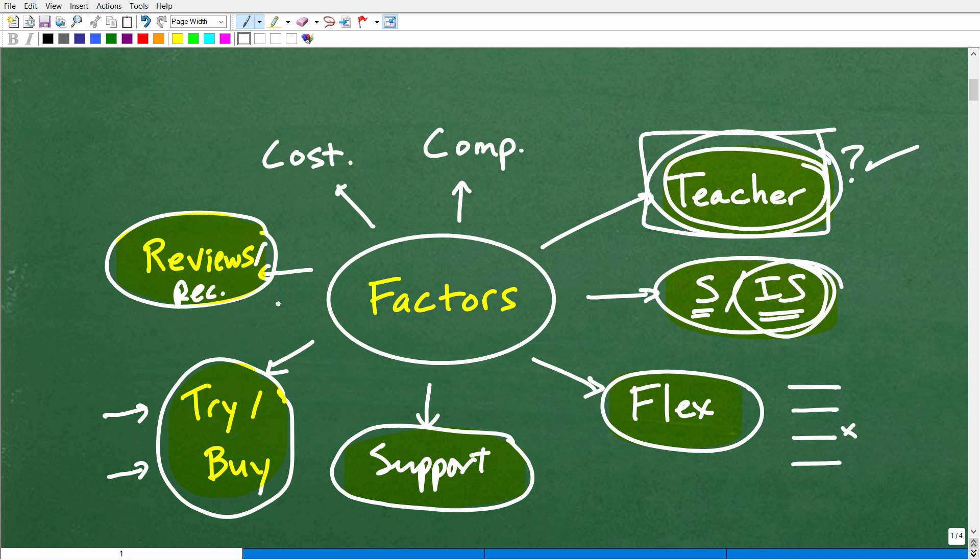In your family, you might have one math program for one child and another math program for another child because they learn differently. So again, you want to do your due diligence and not read the reviews, get those recommendations, but don't put too much bearing on that. Don't feel pressured. You have to do something just because other people are doing it or it's popular. Let's talk about the next thing. And that is cost.